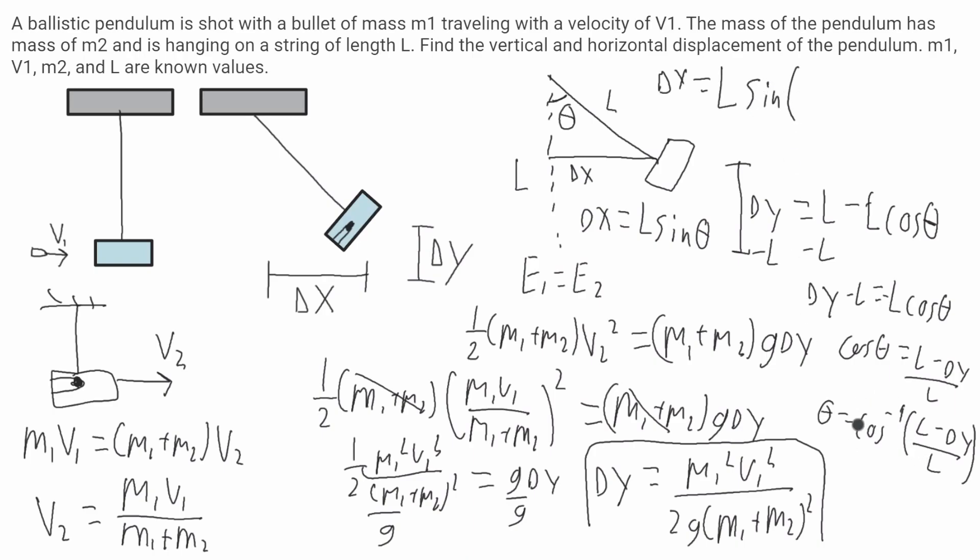We said theta was cosine inverse, cosine inverse of L minus delta y over L.